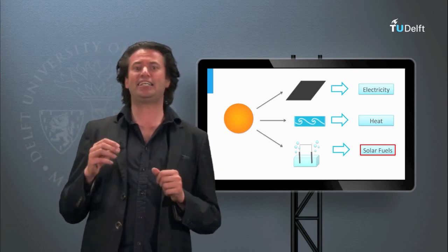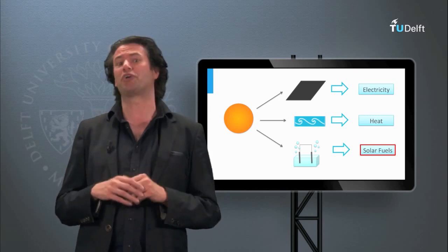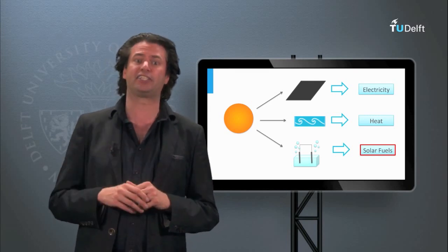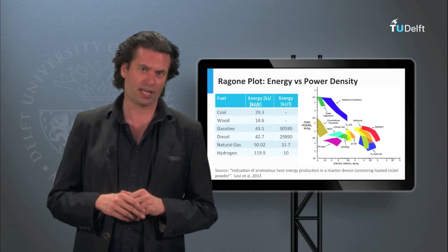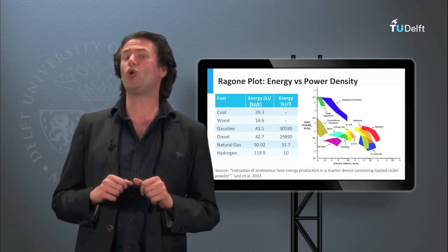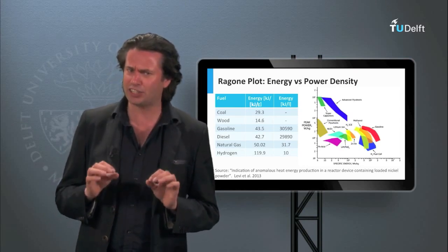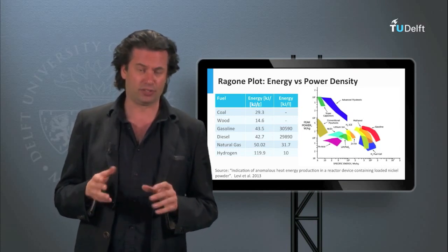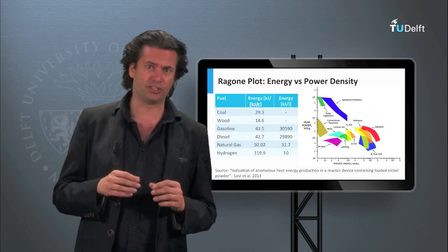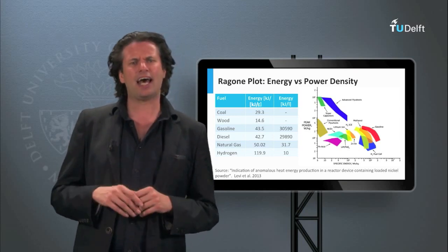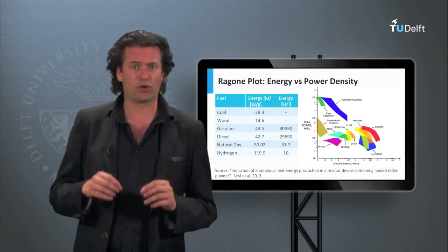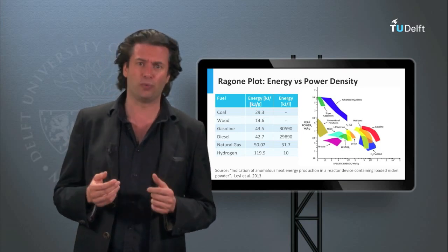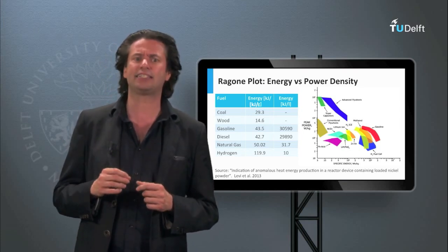But why is that so important? Why would we want to create fuels instead of electricity or heat? Since the sun does not always shine, solar energy is not constant. There are two types of variations, the daily variations, meaning the difference between day and night, and the seasonal variations, because the sun's irradiation in the winter is not the same as in the summer.